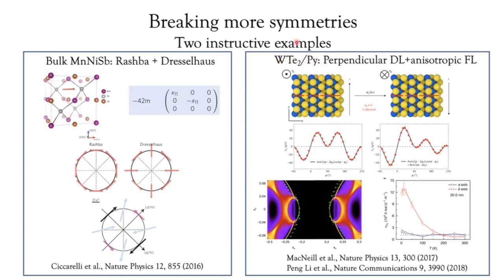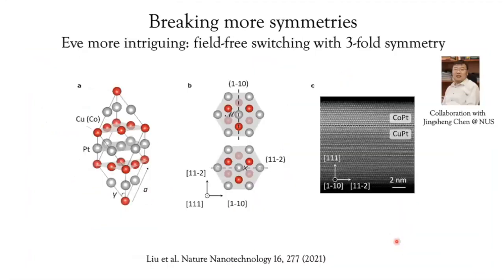Even more interesting is what happens in tungsten ditelluride / permalloy bilayers. In WTe2 there is inversion symmetry breaking at the interface, but additionally there is mirror symmetry only normal to the a-direction — along the b crystallographic direction there is no mirror. This means sending a current parallel or perpendicular to the mirror generates different torques. Experiments from Cornell and from my colleague Shang Zhang demonstrated the existence of a perpendicular damping-like torque as well as a very asymmetric, anisotropic field-like torque.